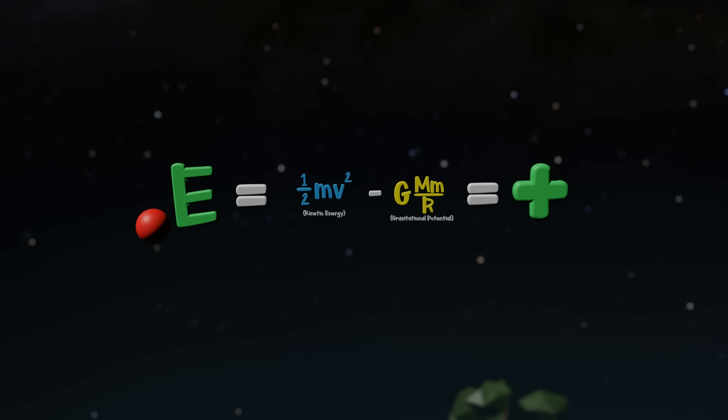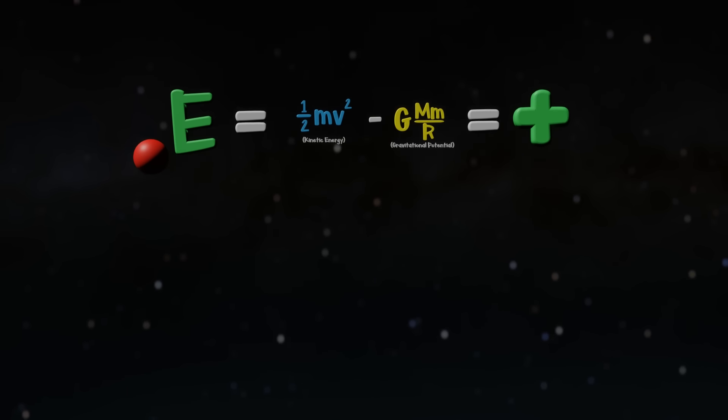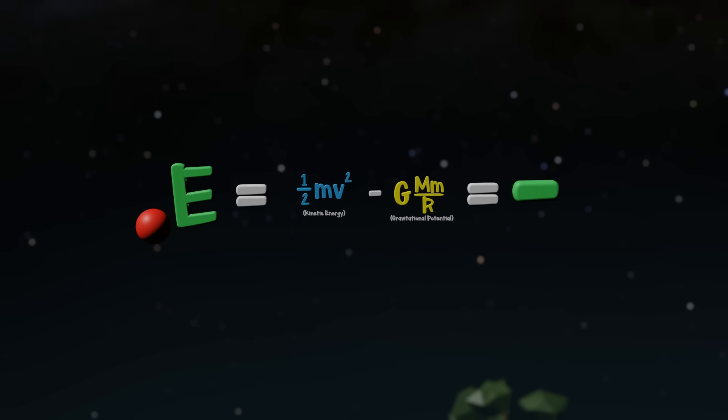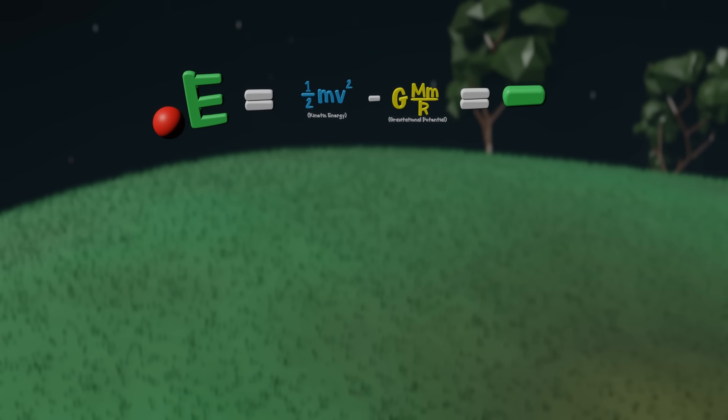Because E is constant, if we solve for E at any given point in our path, we will get the same answer and the same realization. When E has a positive value, our ball is traveling above the escape velocity and will fly off into the cosmos. And if it has a negative value, it eventually falls back to Earth or orbit.